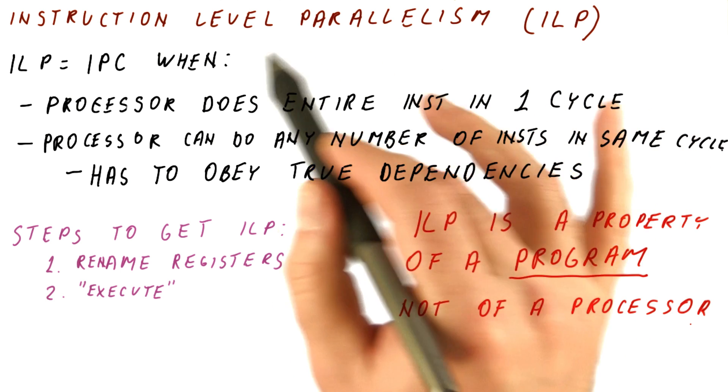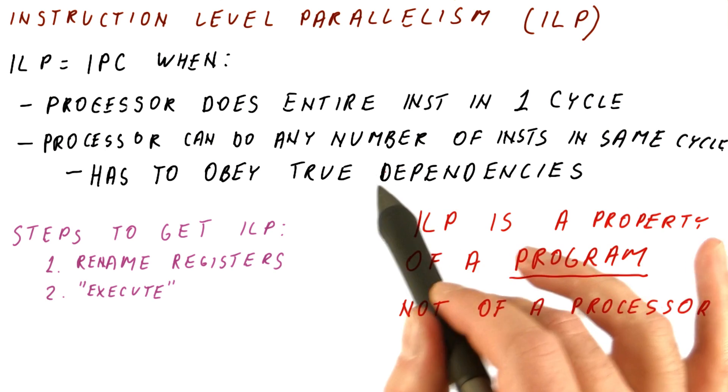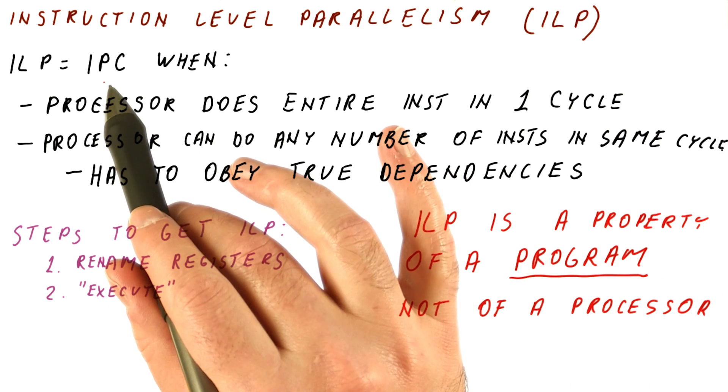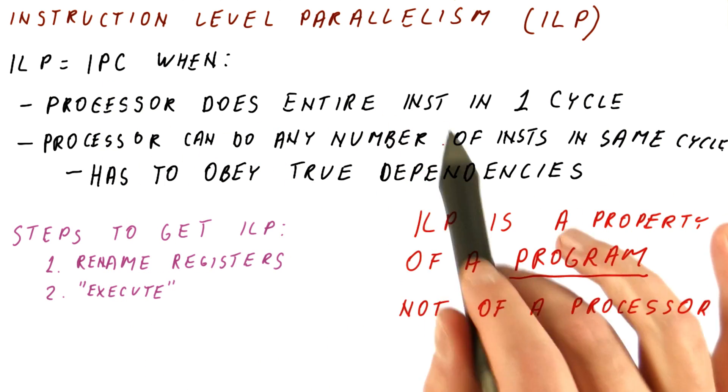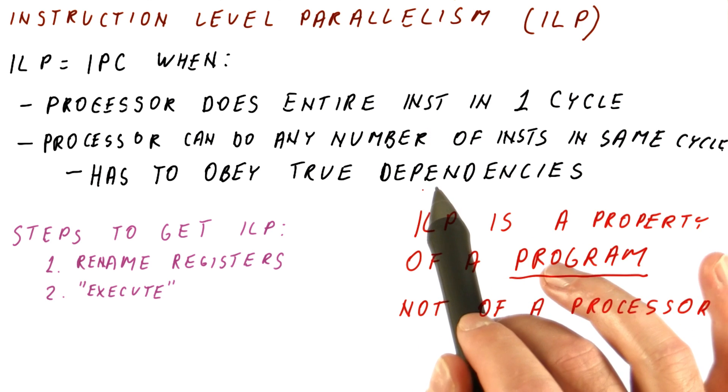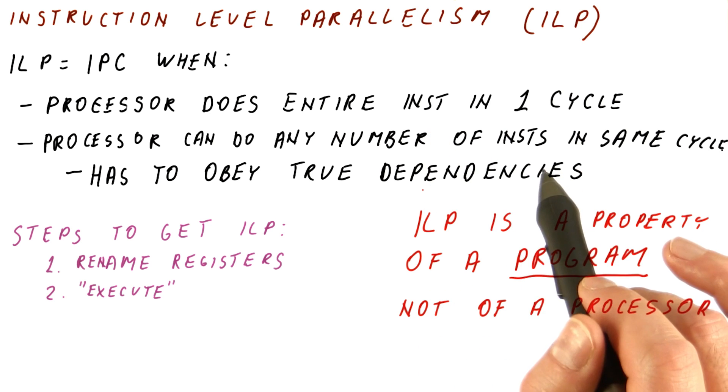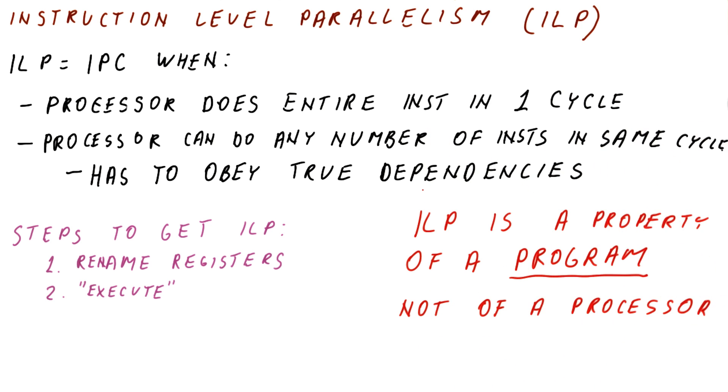So basically, we define the ILP to be what would this program do, as far as the IPC is concerned, on an ideal processor. So it has nothing to do with what kind of processor you actually run it on. It has everything to do with just the dependencies in the program.